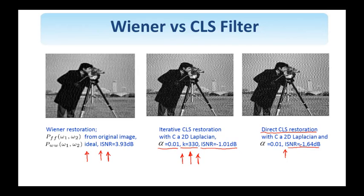With the CLS filter, there are different means to control performance: one is through the value of the regularization parameter; two is through the selection of C — we've been using a Laplacian here; three is through the iterative implementation, where the number of iterations serves as a means of regularization; and four is the introduction of adaptivity discussed earlier. The Wiener filter is a very celebrated filter with many applications beyond image restoration, and with respect to image restoration it was for a long time the gold standard against which everybody compared their results.